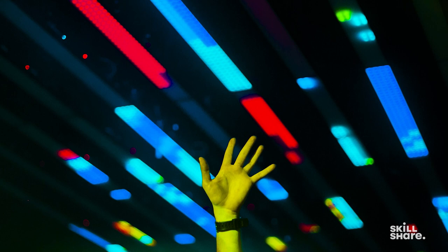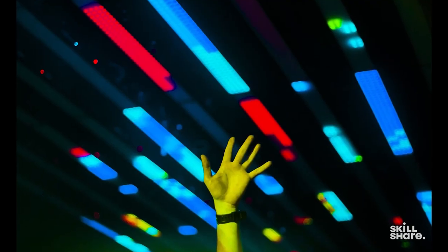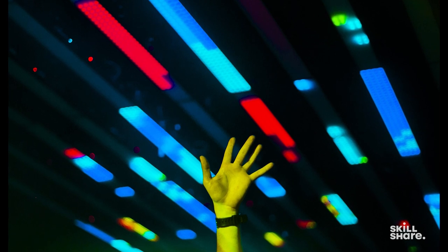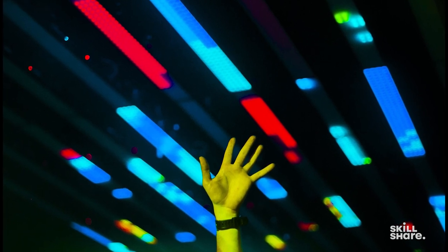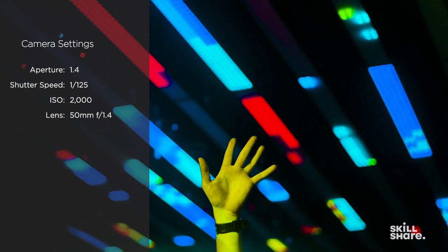This is shot at f/1.4 with my 50mm lens. I was standing on stage inside the DJ booth looking up. This person was really close to the stage with his hands coming up and down, and every time the hand came up I thought it looked really pretty. So I stood there — it was really, really dark — and waited for the hand to come up and caught it. That's f/1.4. I couldn't have gotten that sharp hand in such low lighting conditions without my f/1.4 lens.